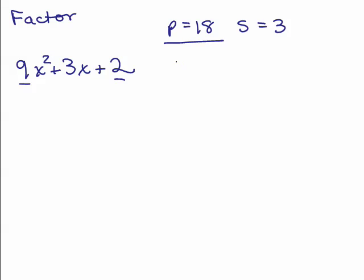So we know the signs of both numbers will be positive, so 1 times 18, 2 times 9, 3 times 6, and those are all the factors, the pairs of factors that are 18. Which one of these adds up to 3? None of them.